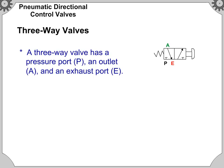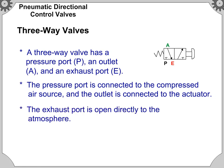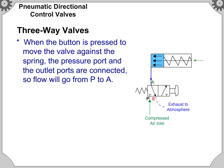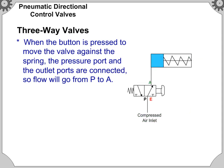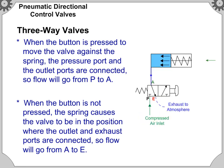A three-way valve has a pressure port P, an outlet A, and an exhaust port E. The pressure port is connected to the compressed air source and the outlet is connected to the actuator. The exhaust port is opened directly to the atmosphere. When the button is pressed to move the valve against the spring, the pressure port and outlet ports are connected so flow will go from P to A. When the button is not pressed, the spring causes the valve to be in the position where the outlet and exhaust ports are connected, so flow will go from A to E.